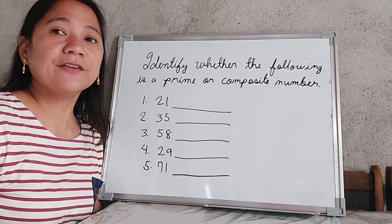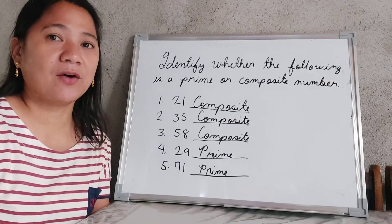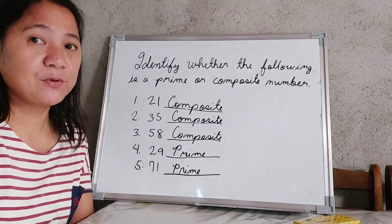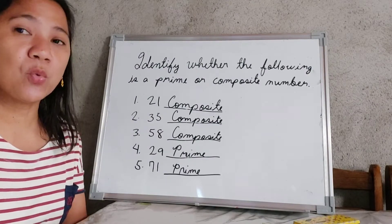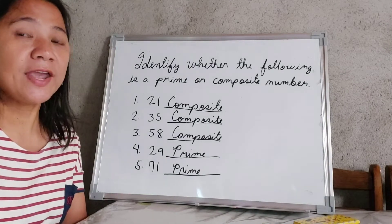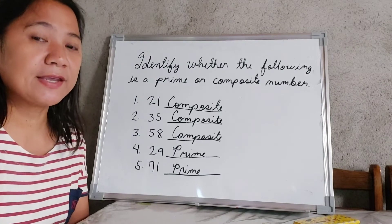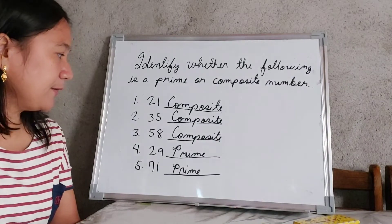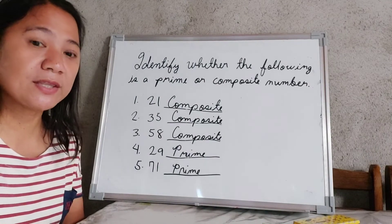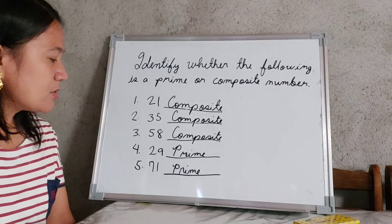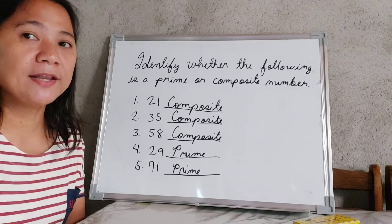Let's check your answers. Number 1, 21 is a composite number because aside from 1 times 21, we can also use 3 times 7, which equals 21. Number 2, 35 is also composite because aside from 1 times 35, we can use 5 times 7. Number 3, 58 is composite because aside from 1 times 58, we can use 2 times 29. Numbers 4 and 5 are both prime numbers because they can only use 2 factors: 1 and the number itself.